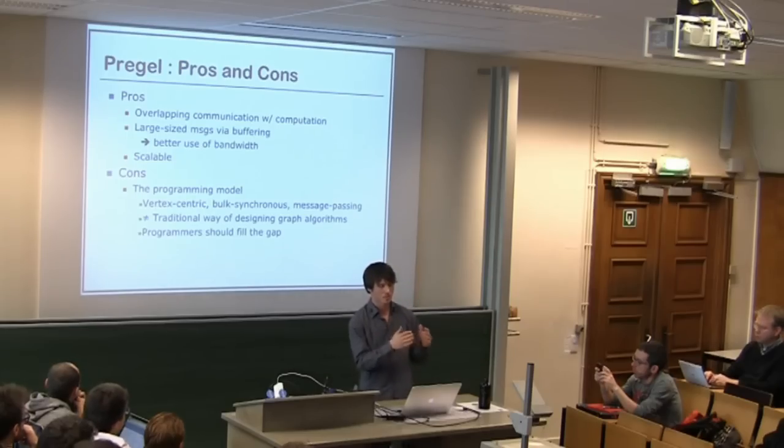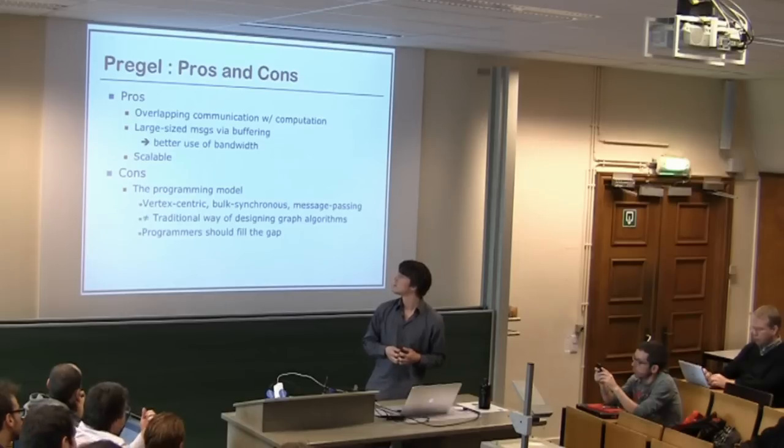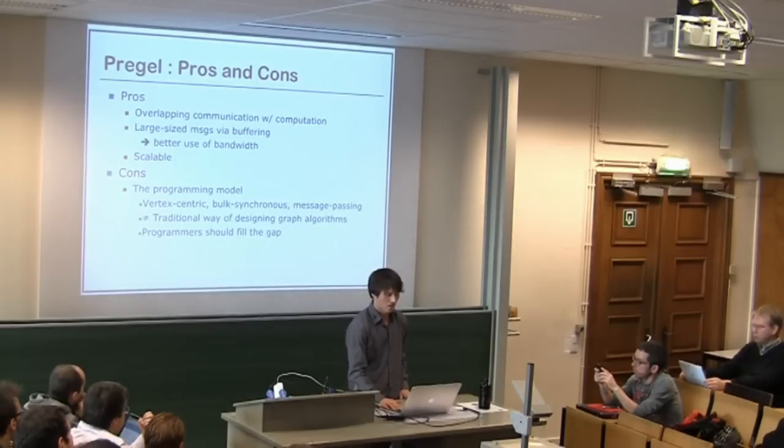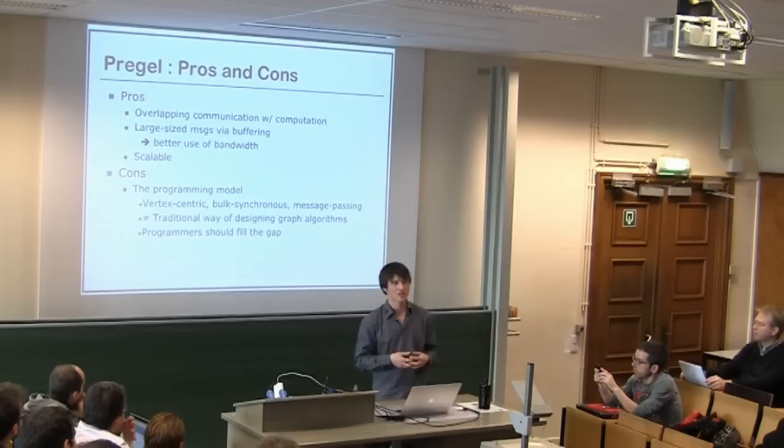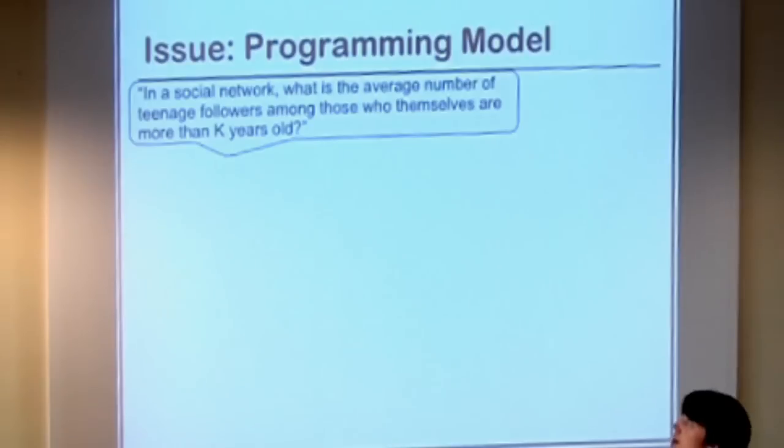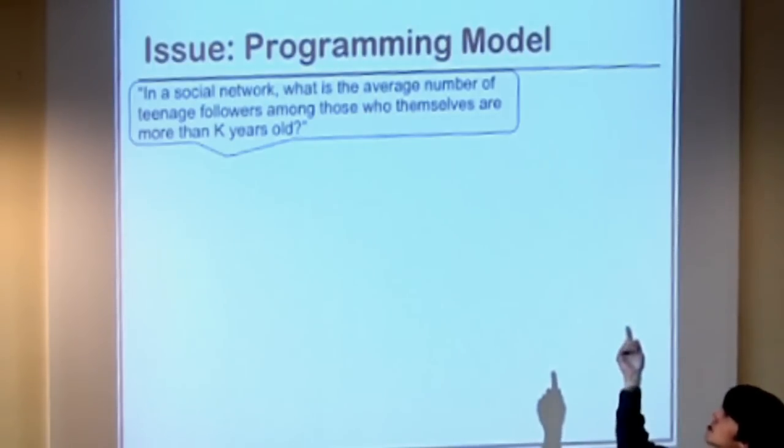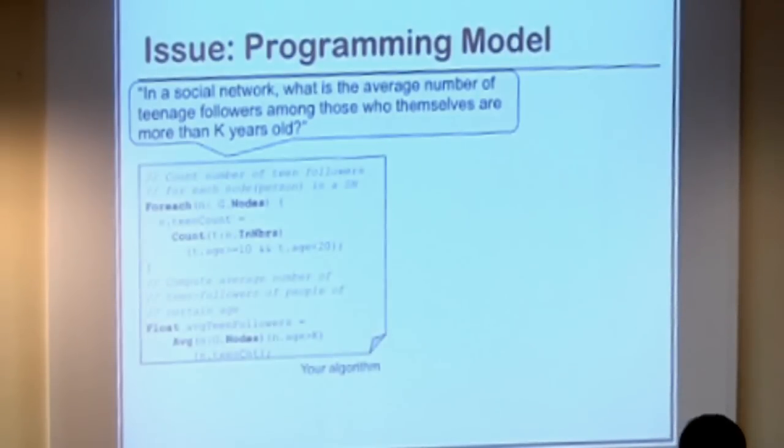It's pretty difficult to write traditional graph algorithms in this paradigm. So normally, you'd have a paper with some pseudocode description of an algorithm. And that completely doesn't look like the code that you use for giraffe. So we programmers should fill this gap. And we should convert these pseudocodes to pregol programs. Let me give you an example for this. For example, in a social network, you want to know the average number of teenage followers of the people who themselves are older than k-years. Otherwise known as the how cool is your daddy query.